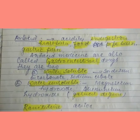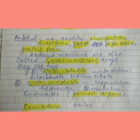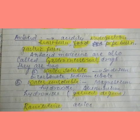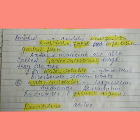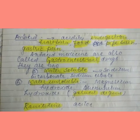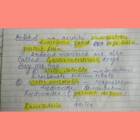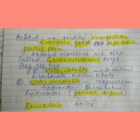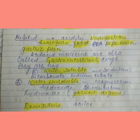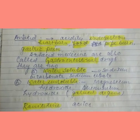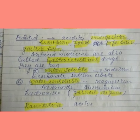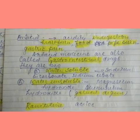Anti-acid medicines are also called gastrointestinal drugs. They are of two types: first, water-soluble, and second, water-insoluble. Water-soluble examples are sodium bicarbonate and sodium citrate, which come under the brand name Eno, etc.